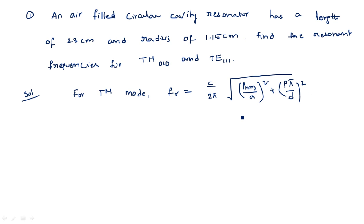Let us check whether all values in this equation are known. P_nm is taken from a table given for different values of m and n. A is the radius of the circular waveguide, and D is the length of the circular cavity resonator. P is from the mode index.